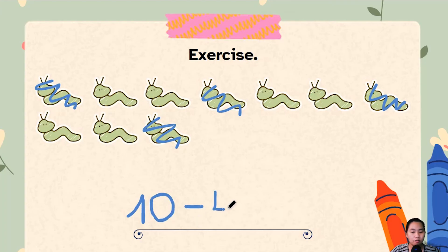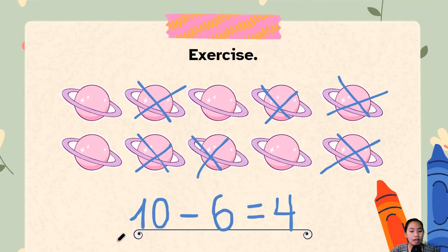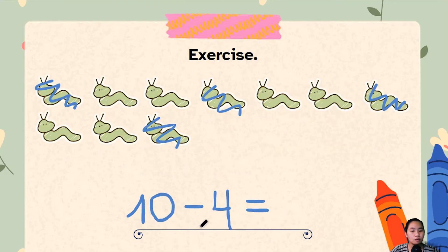Minus four equals what is the difference between ten and four? Well, if you remember our problem that we did over here, ten minus six equals four. Ten minus four equals what? Six, all right. Ten minus four equals six.